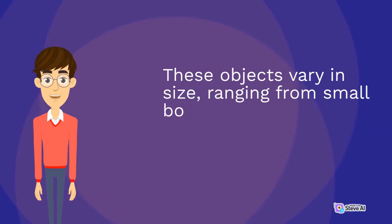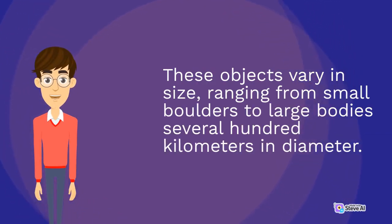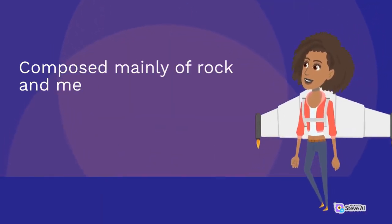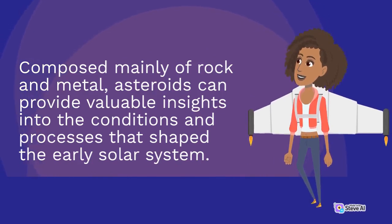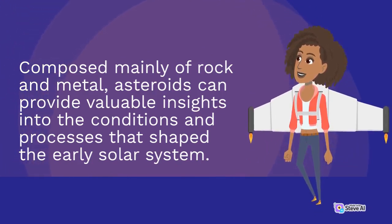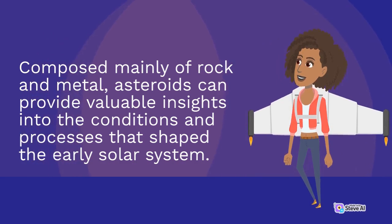These objects vary in size, ranging from small boulders to large bodies several hundred kilometers in diameter. Composed mainly of rock and metal, asteroids can provide valuable insights into the conditions and processes that shaped the early solar system.